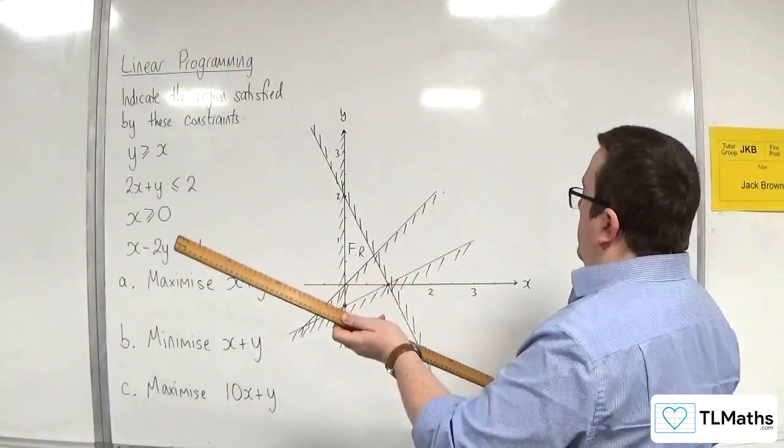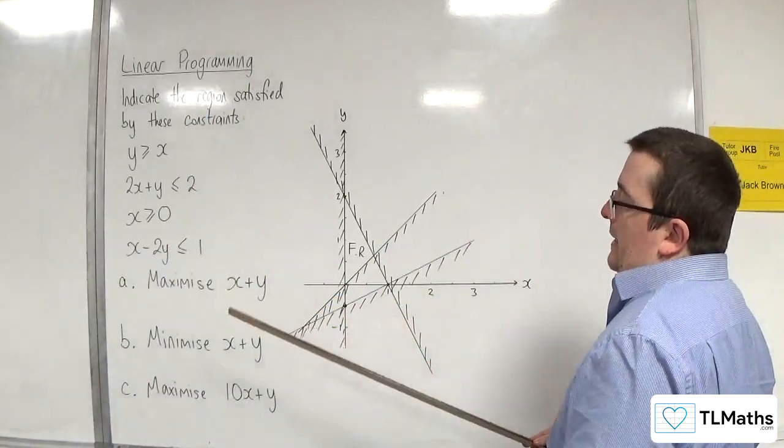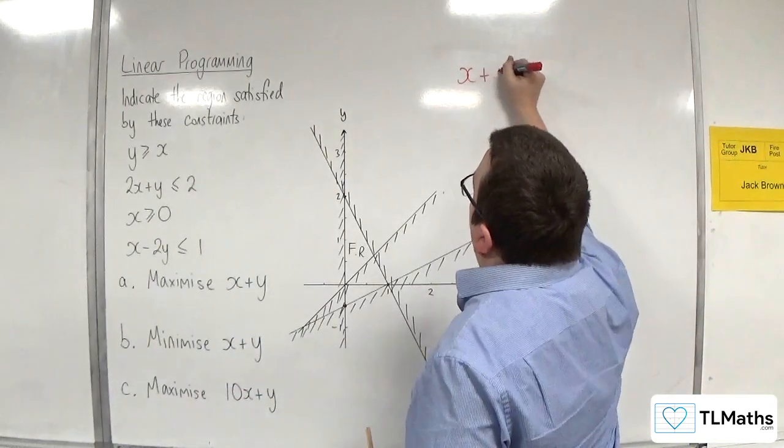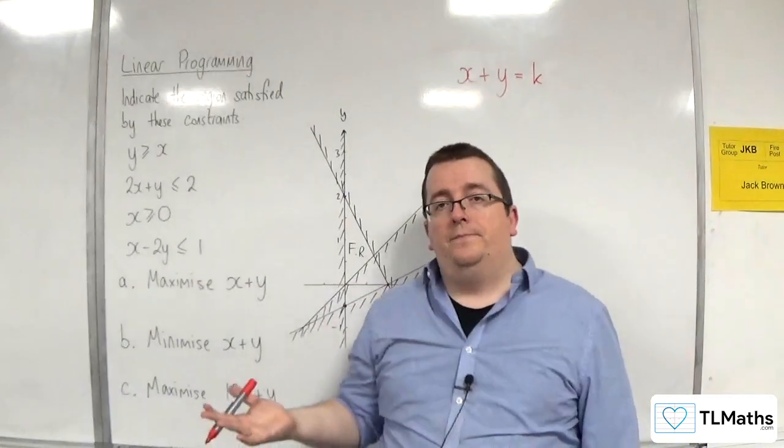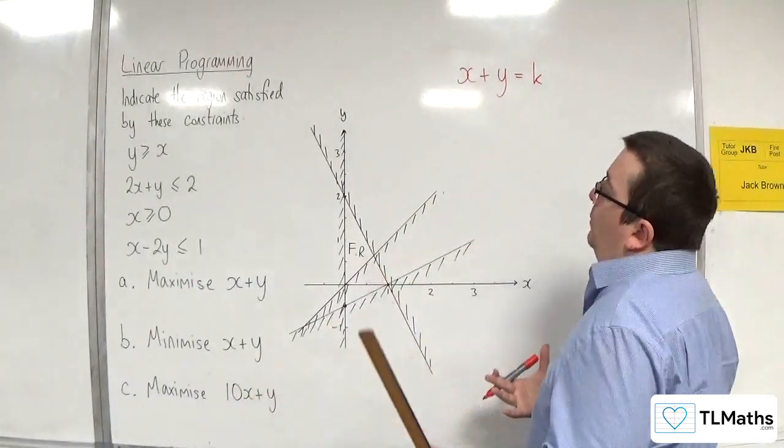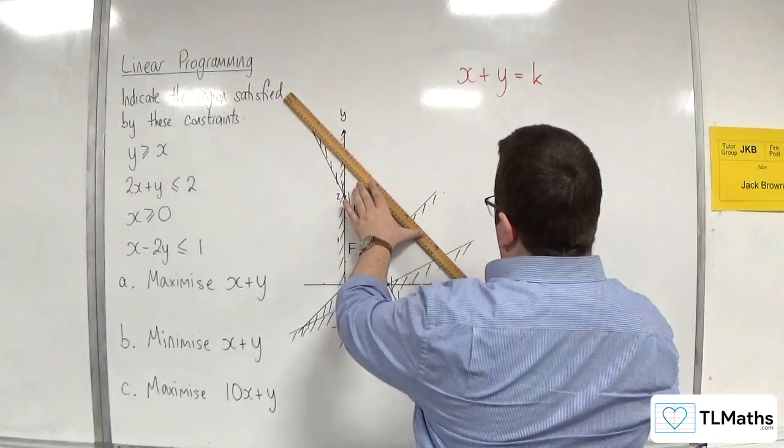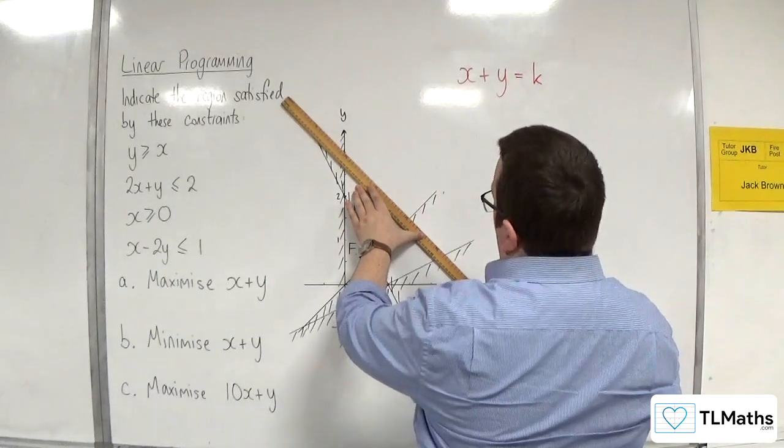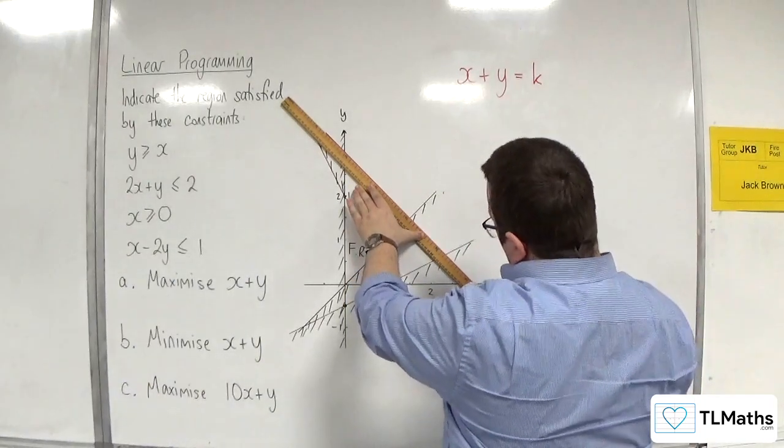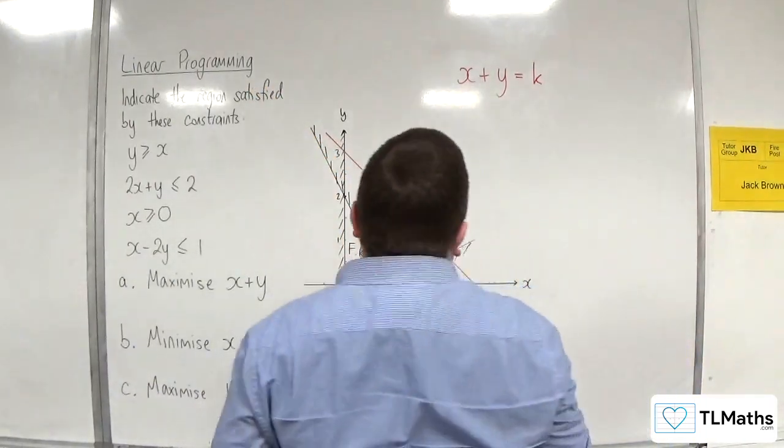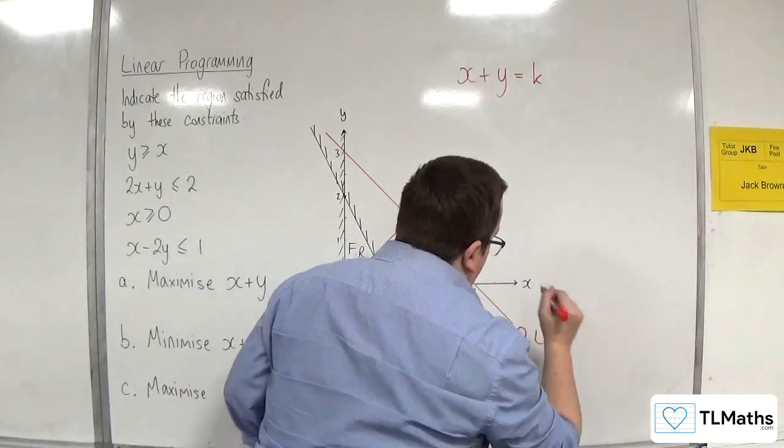So, I'm going to draw on a line of the form X plus Y is equal to K. The value of K can be anything you want. So, if it was 3, for example, it would go through 3 on the Y axis and 3 on the X axis, and would look like this. So, this would be my objective line.